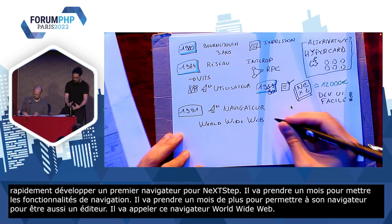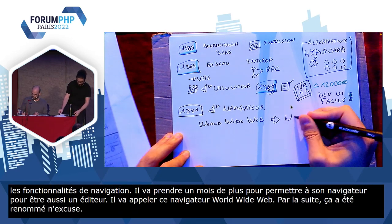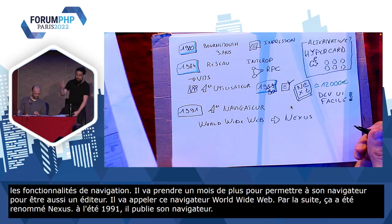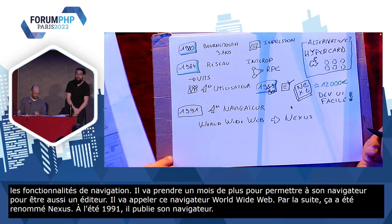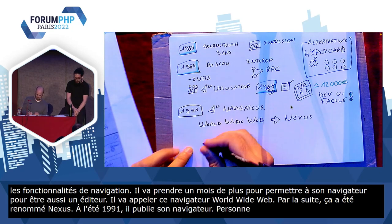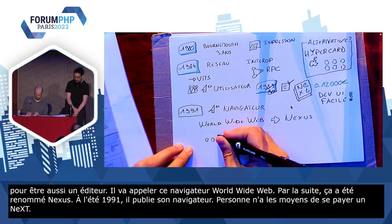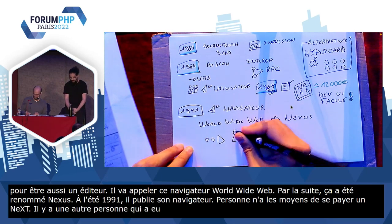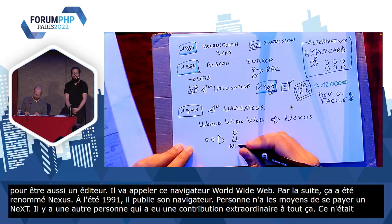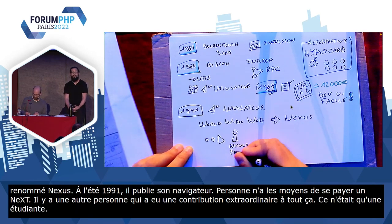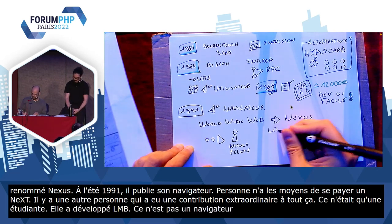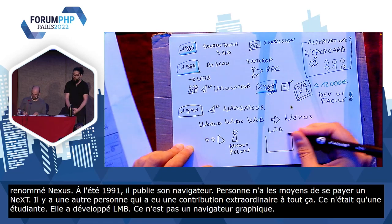À l'été 1991, c'est la fête : il publie sur le serveur FTP un serveur HTTP pour NeXTSTEP. Mais justement, il n'y a pas ce navigateur-là disponible, parce que personne n'a les moyens de se payer un NeXT. Donc, il y a une autre personne, Nicolas Pellot, qui a eu une contribution extraordinaire. Ce n'était qu'une étudiante qui a contribué au projet, et elle avait développé un navigateur qui s'appelle LMB, pour Line Mode Browser. Comme son nom l'indique, ce n'est pas un navigateur graphique, c'est en ligne de commande. C'est ce navigateur-là qu'ils vont publier pour partager le web à l'extérieur du CERN.